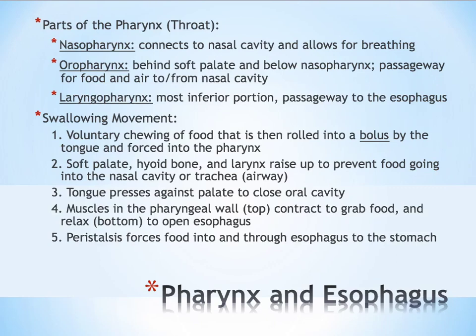Once the salivary glands have done their job and the food is thickened up and ready to be swallowed, there are a couple of parts to that process. The first place that food passes through is called the pharynx — we call it the throat in regular everyday language, but anatomically it's called the pharynx. The pharynx connects the oral cavity to the nose and to the esophagus, and there are three parts going from the superior portion to the bottom.